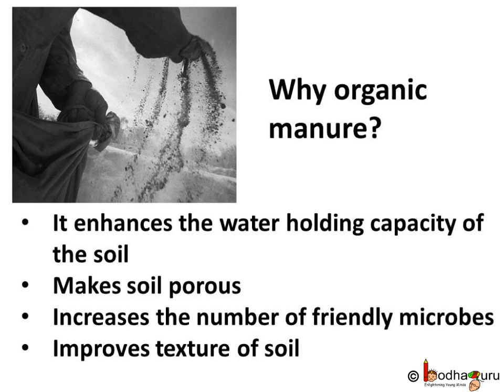Organic manure is better than chemical fertilizer because it enhances the water holding capacity of the soil. It makes the soil porous, due to which exchange of gases becomes easy. It increases the number of friendly microbes and improves the texture of soil by adding humus.